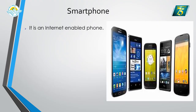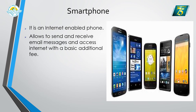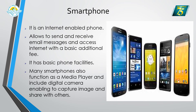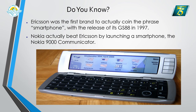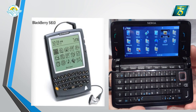A smartphone is an internet-enabled phone. It allows us to send and receive emails and access the internet. It has basic phone facilities and many smartphones have functions like a media player and digital camera to capture and share images. Ericsson was the first brand to create a smartphone, called the GS88, in 1997. Nokia also had its own smartphone called the Nokia 9000 Communicator.